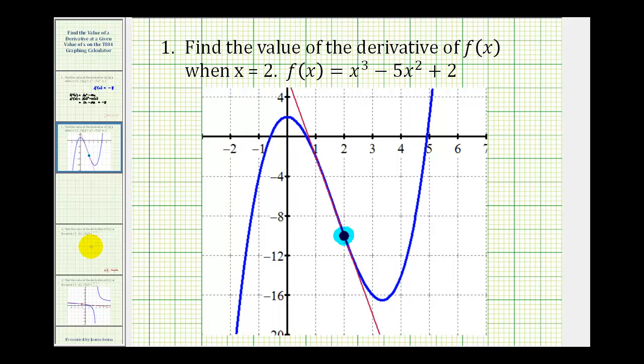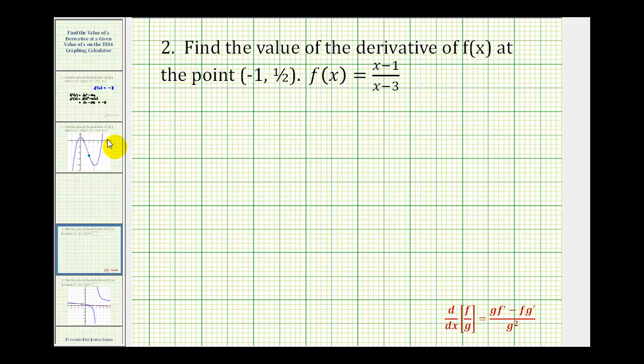Let's take a look at a second example. We want to find the value of the derivative of our function at the point (-1, ½). Again, here they're giving us the point, but to do this, we actually only need the value of x equals negative 1. So let's go back to our calculator, and we'll show it both ways again.